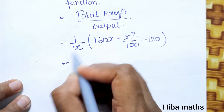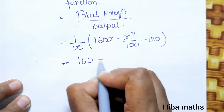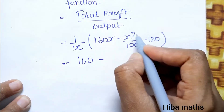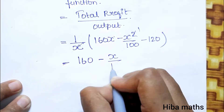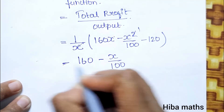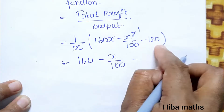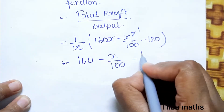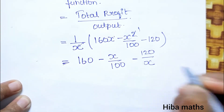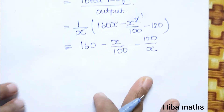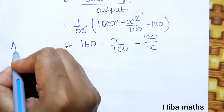Dividing through by x: x cancels, giving 160 - x/100 - 120/x. This is the average profit function.